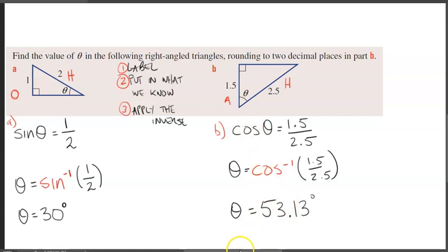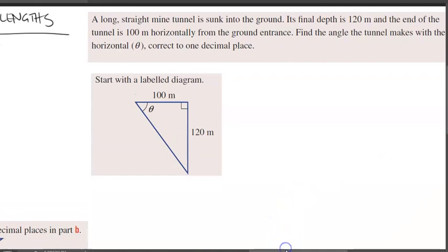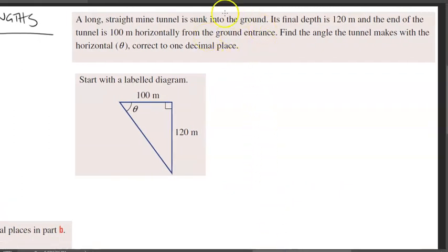Now, you've been working with some pretty basic examples. Let's look into a real-life context example right here, which was taken straight from the textbook. Now with this, we have a question here. Now generally, depending on the question, sometimes the question will give you a diagram, sometimes it won't. You've just got to be very, very careful if it doesn't give you a diagram with how you draw this diagram. Because one little slip up and you might get the wrong answer. And this right here is one of the trickiest things to do is to visualize what's going on based on the question. So, in this question here, a long straight mine tunnel is sunk into the ground. Its final depth is 120 meters and the end of the tunnel is 100 meters horizontally from the ground entrance. Find the angle the tunnel makes with the horizontal correct to one decimal place.